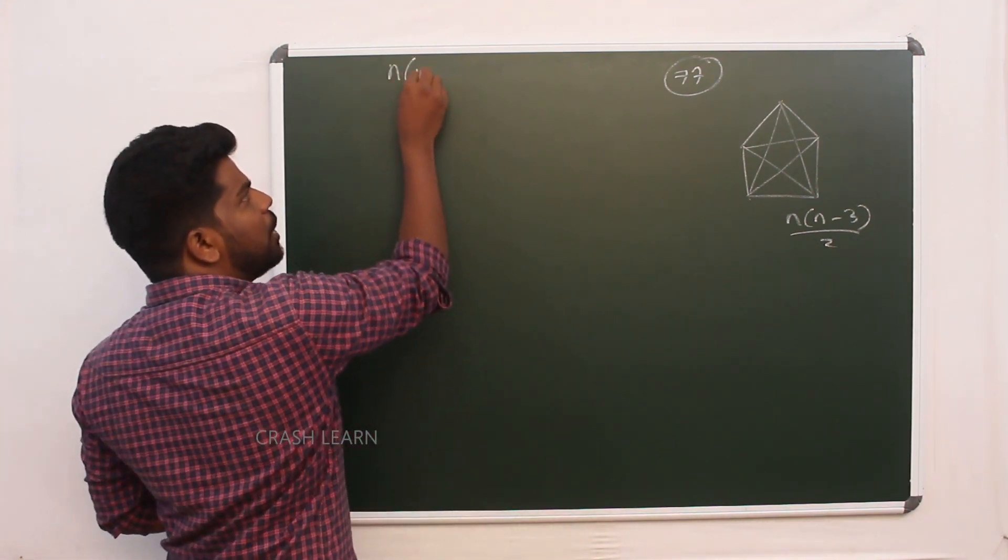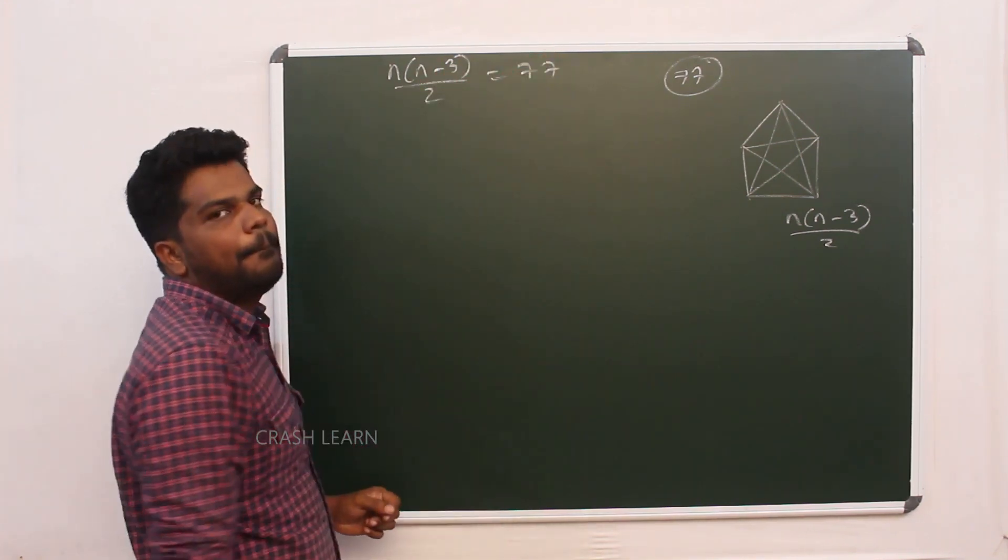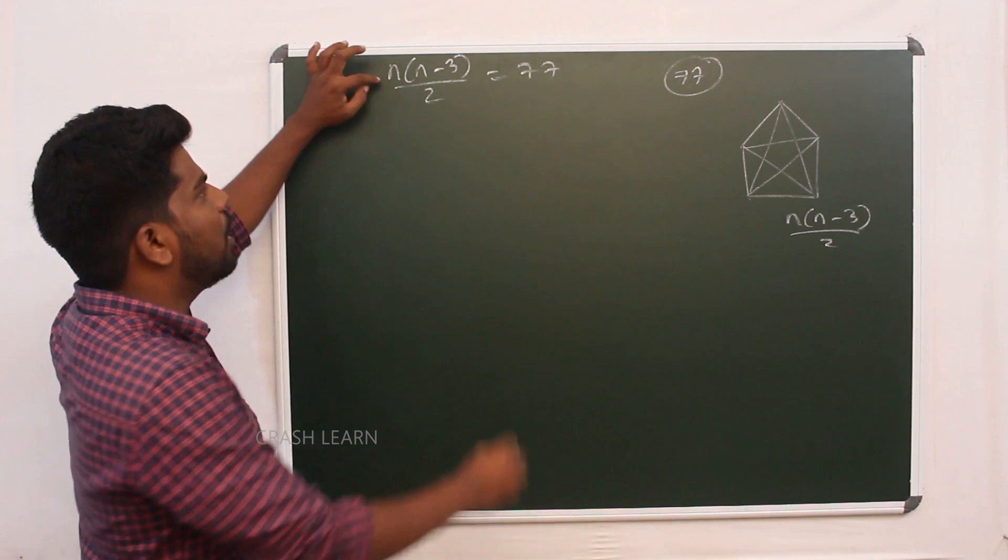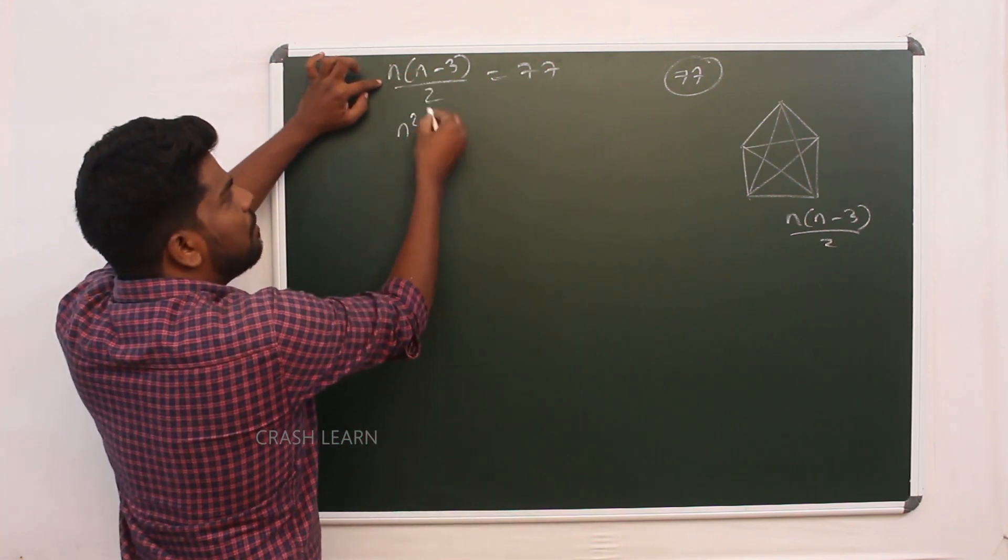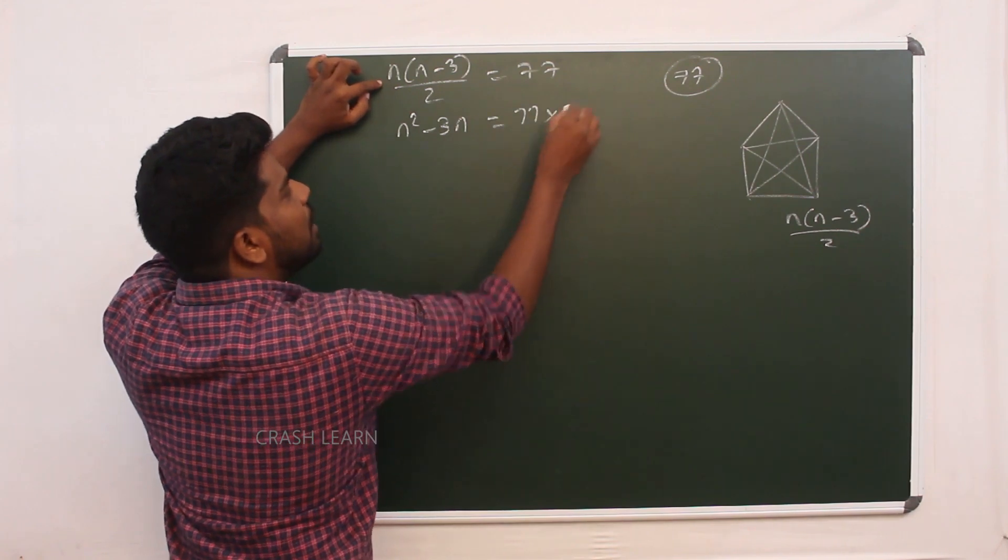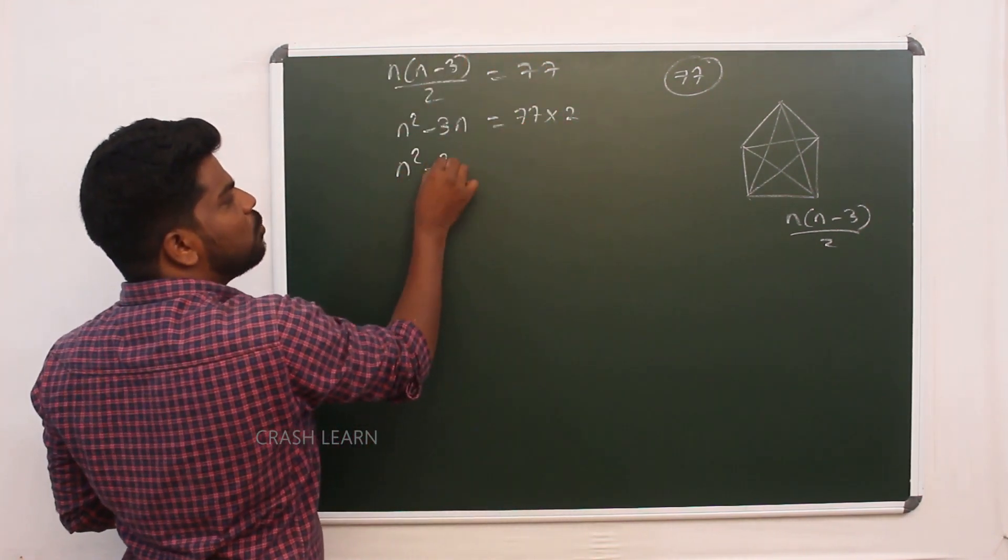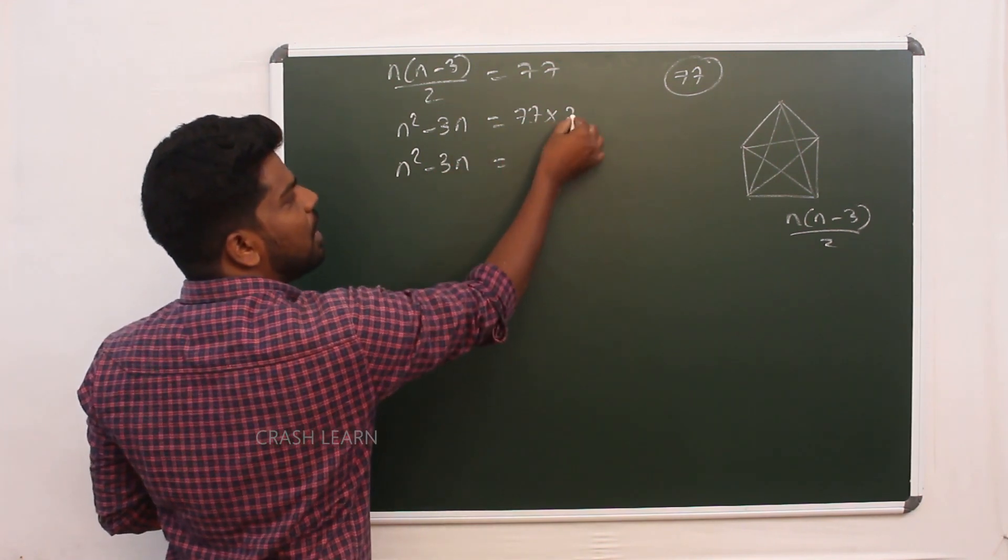If we ask, we ask 2 into n minus 3 by 2, sum of 77 by 2 into 2. n minus n is n square minus n minus 3 is 3. Sum of 78 into 2 by 2 into 2. n minus 3 is equal to 7 by 4.